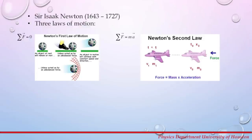The second Newton law states that if there is a net external force acting on an object, the object will accelerate. The direction of acceleration is in the direction of the force, and the magnitude is directly proportional to the magnitude of the force and inversely proportional to the mass of the object. The equation that explains this law is F equals ma, where F and a are vectors.